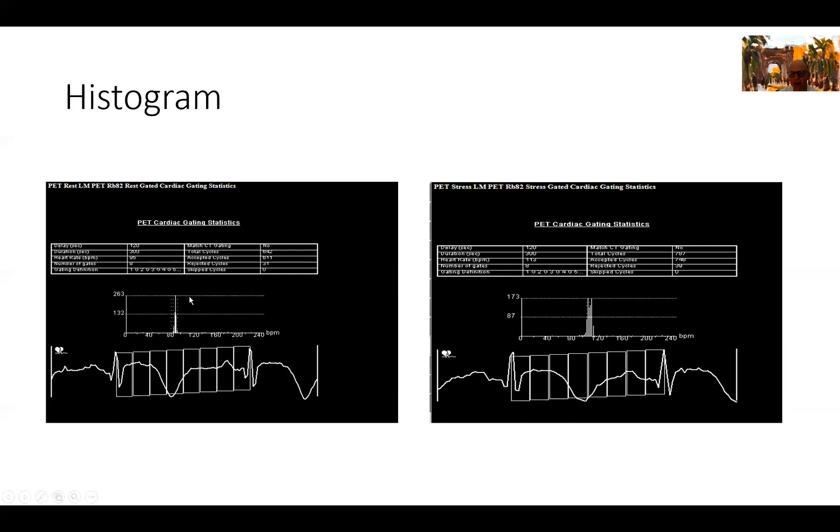Then the next step is to look at the gated images. So before we do that, we interrogate the acquisition part of it. These are the rest images on this side. The heart rate was 95, with a beautifully tight histogram here for the heart rate. In the stress images, this patient's heart rate jumped up to 113. This is not unusual. This patient has stopped his beta blockers for whatever reason when he came to the stress lab. This is a pharmacological stress test, but he was tachycardic at rest and more tachycardic post-pharmacological stress testing with adenosine. You can see here his heart rate was 113 with a nice tight histogram.